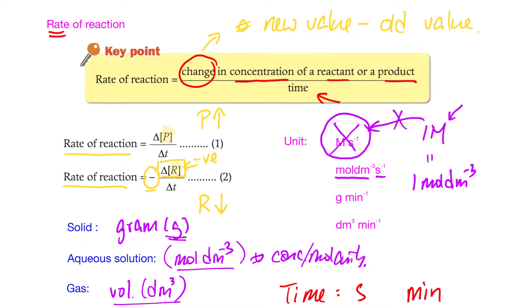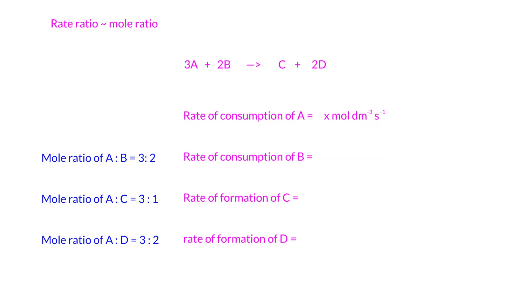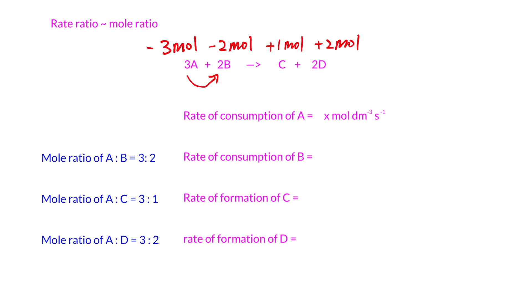Now we'll talk about the relationship between rate ratios and mole ratios. For the reaction 3A + 2B → C + 2D, the mole ratios are 3:2:1:2. If I know that the rate of consumption of A is x mol per dm³ per second, I can use the mole ratio of A to B (which is 3:2) to calculate the rate of consumption of B. When 3 moles of A are used up, 2 moles of B must also be used up at the same time.